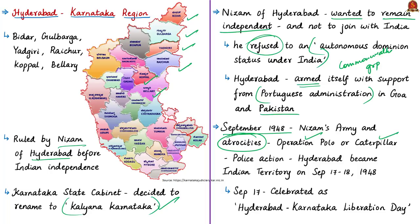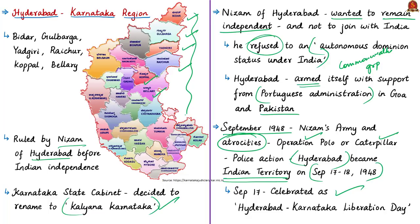This police operation is called Operation Polo, also sometimes called Operation Caterpillar. It began on September 13, 1948 and lasted until September 18. The Nizam surrendered and Hyderabad became an Indian territory on September 17–18, 1948. This is why the people in this region celebrate Hyderabad Karnataka Liberation Day on September 17 every year. When the new state of Mysore was reorganized in 1956, Kannada-speaking areas of Hyderabad province were added to the new state of Mysore. The name of Mysore was later changed to Karnataka in 1973.